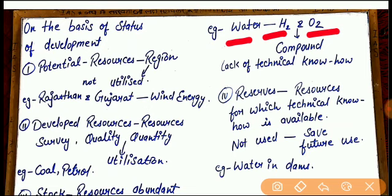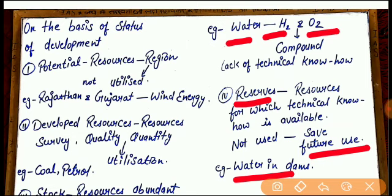The fourth part is Reserves. What are called Reserves? Resources for which technical know-how is available — meaning we have resources in a very huge quantity and for them technical know-how is also available. But we are not using them nowadays because we are saving them for future use. Like water and dams can be used for hydroelectric generation, but we are not using them right now. So these resources come in the category of Reserves.